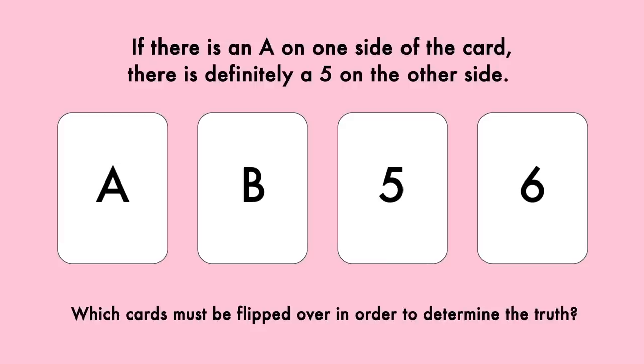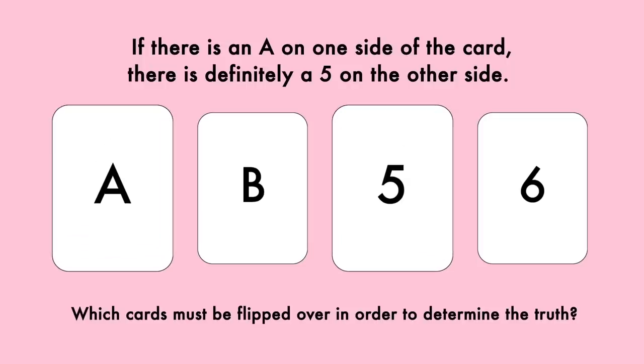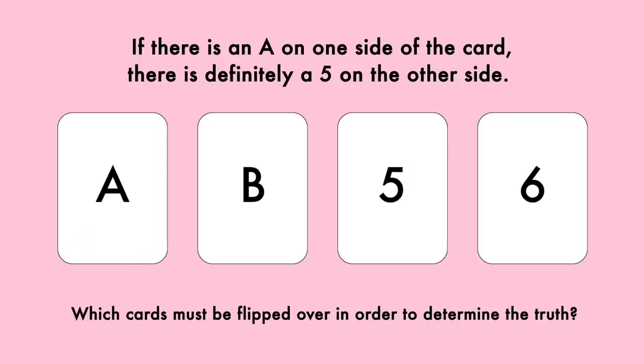Most people who answer this too quickly do get it wrong. In fact, about 90% of people don't get this at first. If your answer is the A and 5, that is incorrect. But if you answer just A, that is still incorrect. The correct answer is you need to flip over the A and the 6.